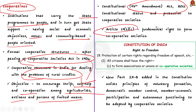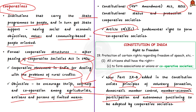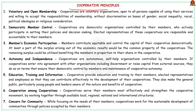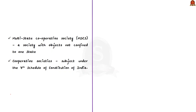This constitutional amendment also added a Part 9B to the Constitution, which contains the principles to be adopted by all cooperatives — for example, principles of voluntary formation, democratic member control, member economic participation, and autonomous functioning. The 97th Constitutional Amendment also provided for MSCS — Multi-State Cooperative Society — meaning a cooperative society which is not confined to one state.